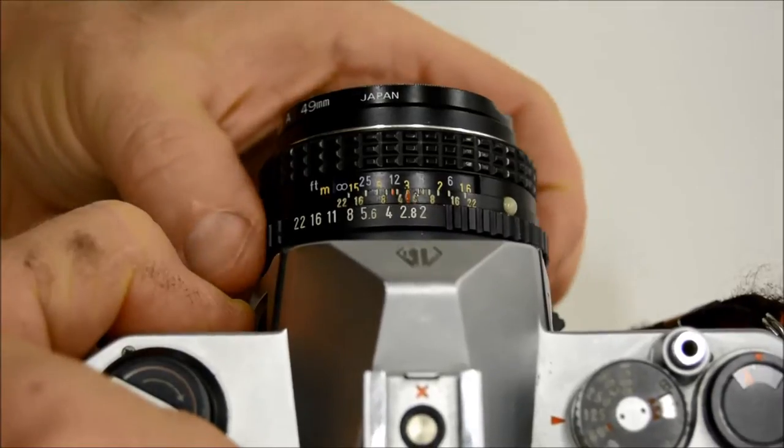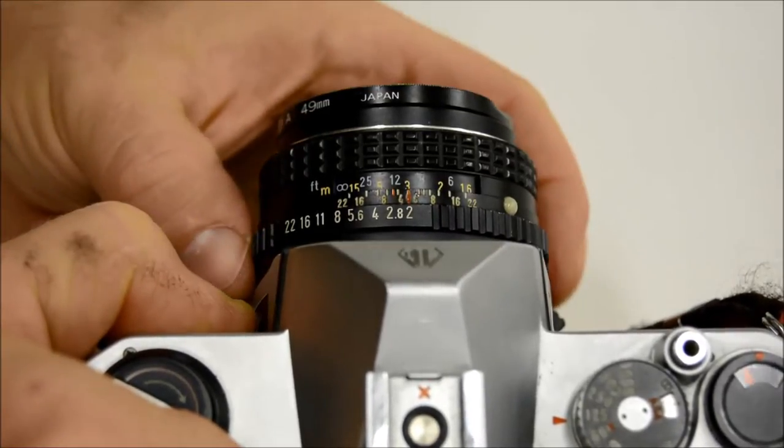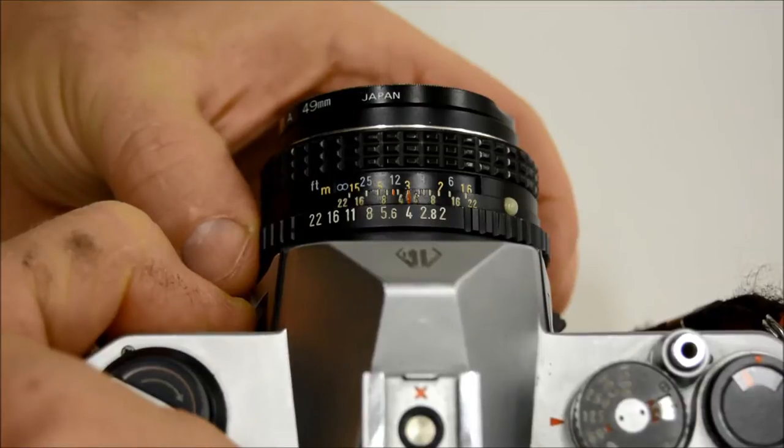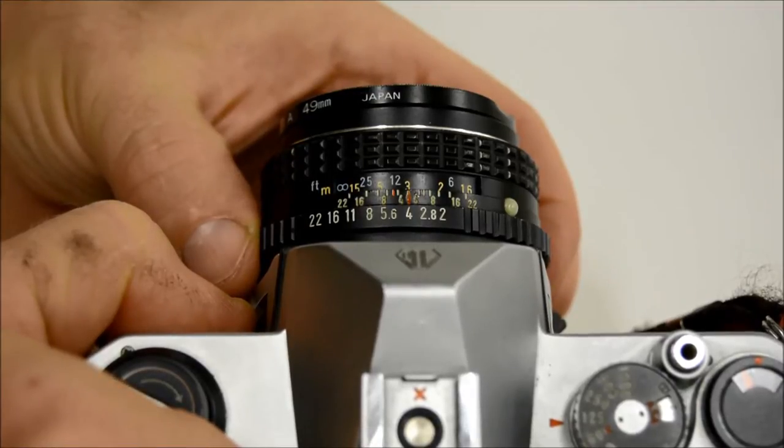So an f2 stop would mean that half the light that's coming in the front is going out the back. f4 would mean a quarter of the light that's coming in the front is going out the back, and so on.